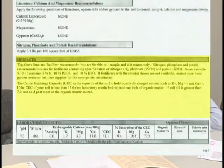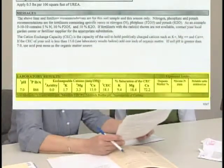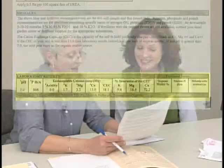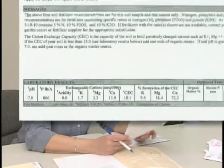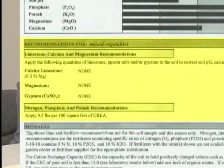The messages define exactly how you're going to apply the amendments they recommend. Lastly are the laboratory results at the bottom, and this is an area that's often confusing to people — all kinds of numbers, abbreviations, and things most of us just don't use day to day. Fortunately, you can ignore those laboratory results at the bottom, because all of those readings have already been incorporated into the recommendations. That's just for chemists who enjoy seeing the raw data.